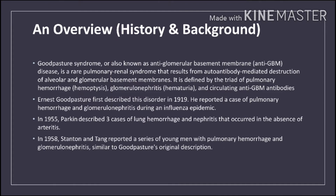He reported a case of pulmonary hemorrhage and glomerulonephritis during an influenza epidemic. In 1955, Parkin described three cases of lung hemorrhage and nephritis that occurred in the absence of arteritis. In 1958, Stanton and Tong reported a series of young men with pulmonary hemorrhage and glomerulonephritis similar to Goodpasture's original description.